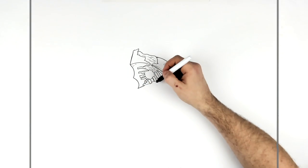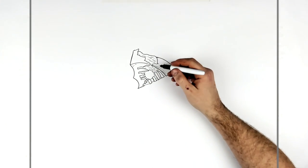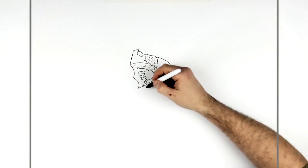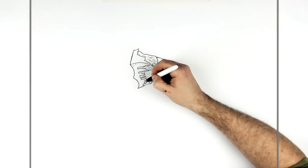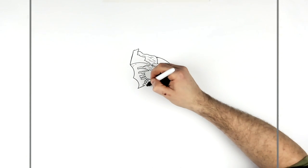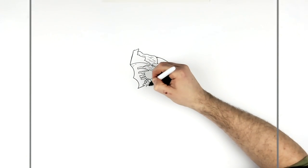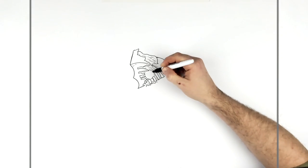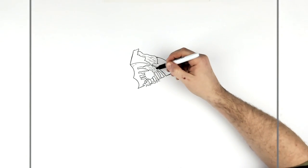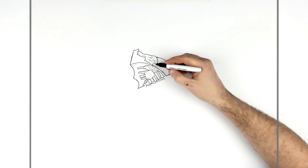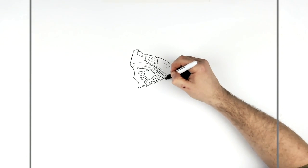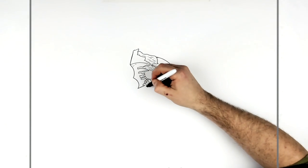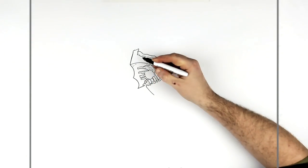Okay, so bottom jaw teeth and stuff. So the teeth are real long. So we'll go from right here, so the top of this gum line just comes across. And it's just all these bumps. And each of these will be a tooth, like a long, spiky tooth.